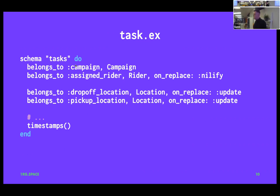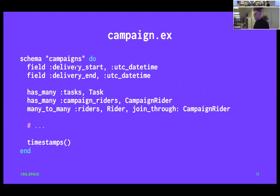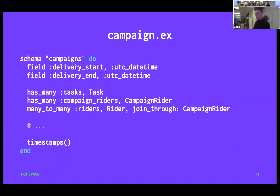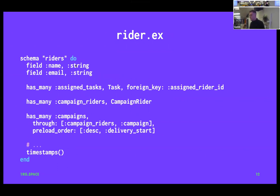This is our delivery. There's going to be an association with a campaign, an association with the rider who did that delivery, and then two locations — where you picked the thing up and where you dropped it off. We also have a campaign, which has a start and an end. You can imagine 60 riders showing up to Parkdale Community Food Bank at 10am on a Tuesday, all done by 11, with 17 different deliveries — those are the tasks. We have an association with riders through a join table, storing many-to-many with metadata. And then we have our riders: much like humans, riders have names and emails, plus associations to deliveries and campaigns.